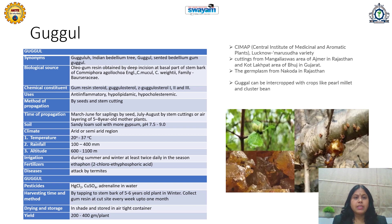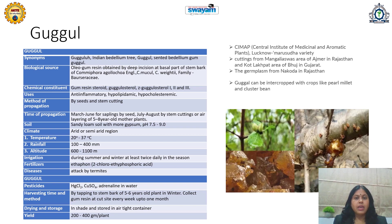Chemical constituents: as it is a resin, it contains volatile as well as non-volatile constituents. Steroidal constituents present are Guggulsterone E or Z, and Guggulsterones 1, 2, 3. Its major uses are anti-inflammatory, hypo-lipidemic, and hypo-cholesterolemic purposes. It is used in heart diseases and various types of inflammation.